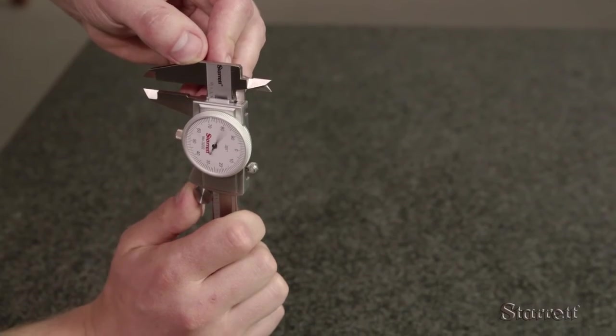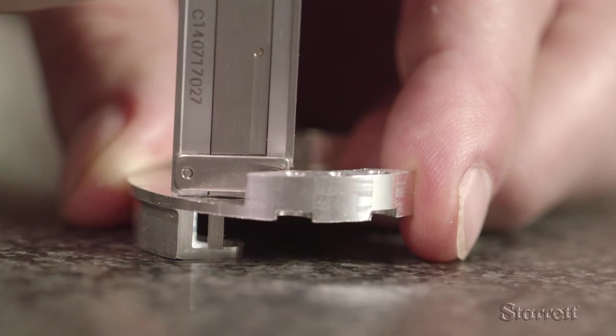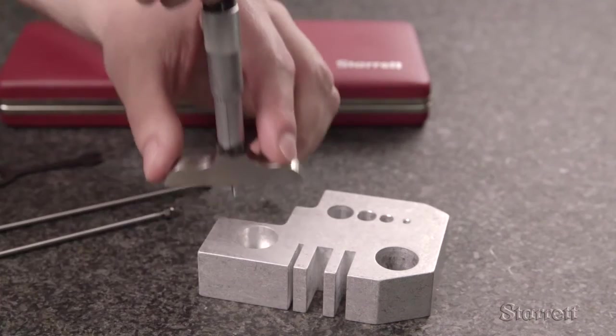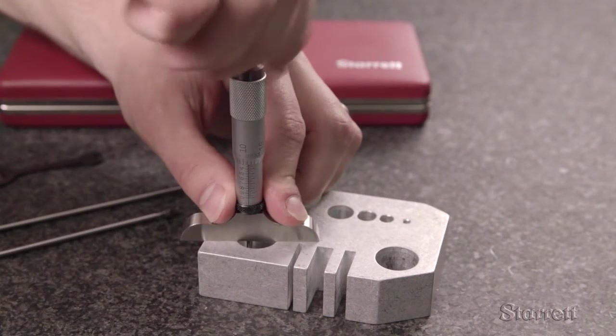To reliably measure within two or three thousandths, you can use the depth rod on a slide caliper. And for the most accurate measurements, use a depth micrometer.